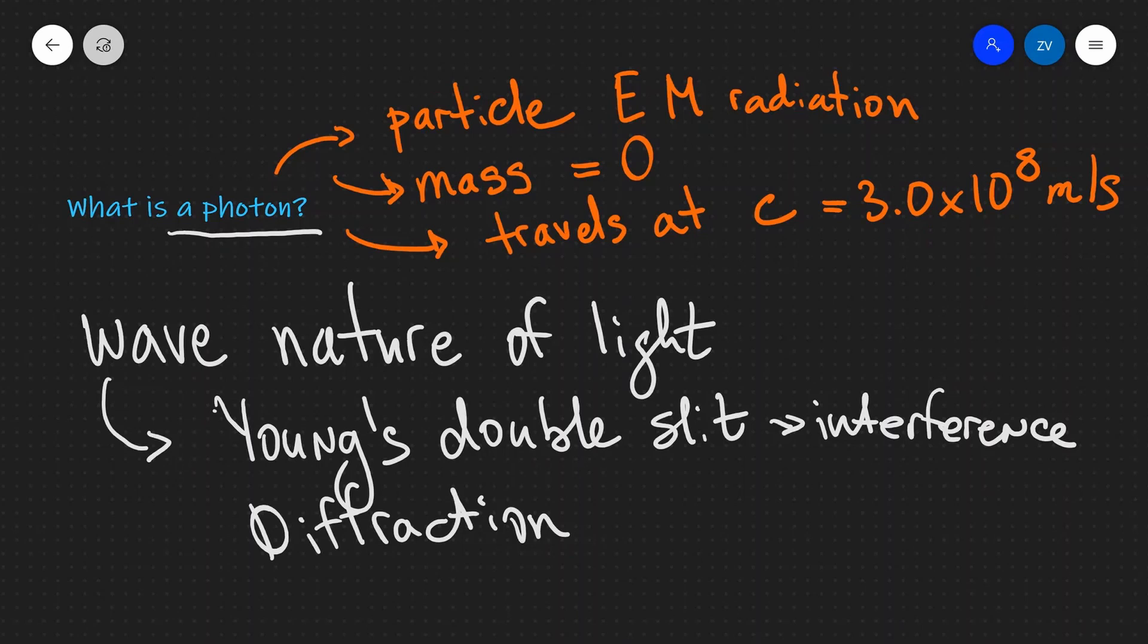Now we can do calculations using two formulas that were developed by Max Planck for the energy of a photon. The first one of these formulas is that the energy of an individual photon is equal to hf. In other words, it's proportional to the frequency of that photon, where h is just a constant, Planck's constant.